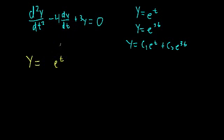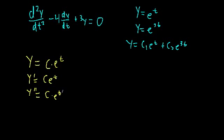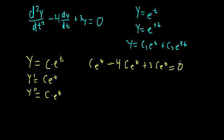But what would happen if we were to multiply the solution by a constant c, where c could be any number like 2.5 or negative 12 — just a constant. Is a constant times a solution still a solution? Let's find out. We take the first derivative — that's just c times e to the t — and likewise the second derivative, that's also c times e to the t. So if we plug these in, we get the second derivative minus 4 times the first derivative plus 3 times y, and that's equal to zero.